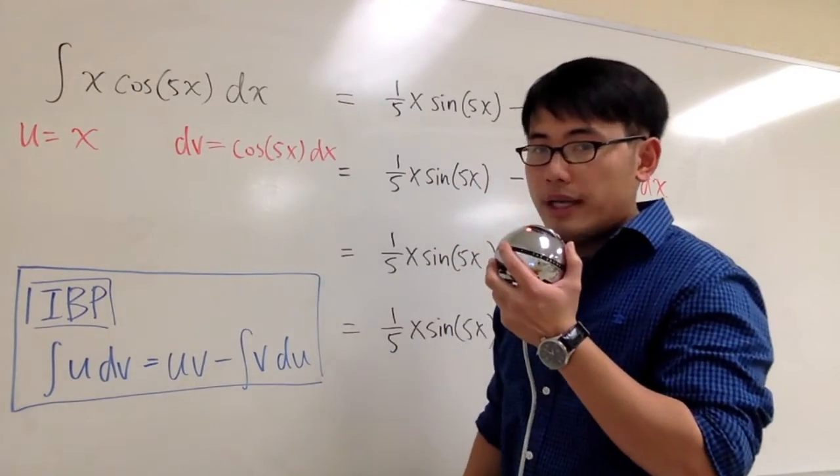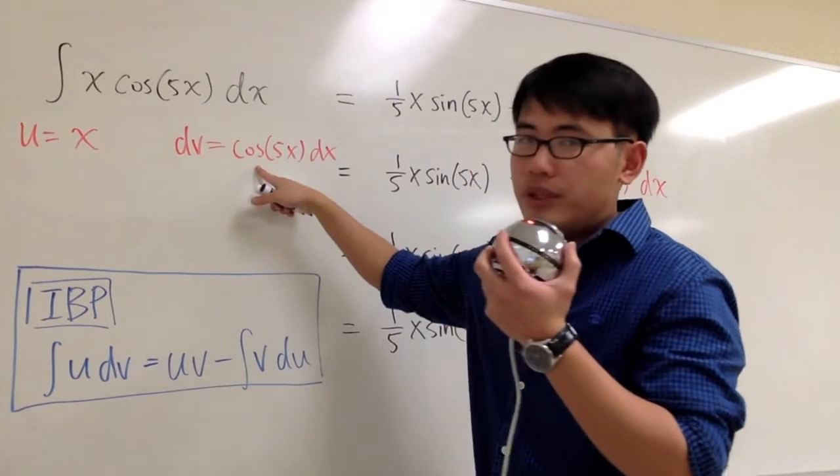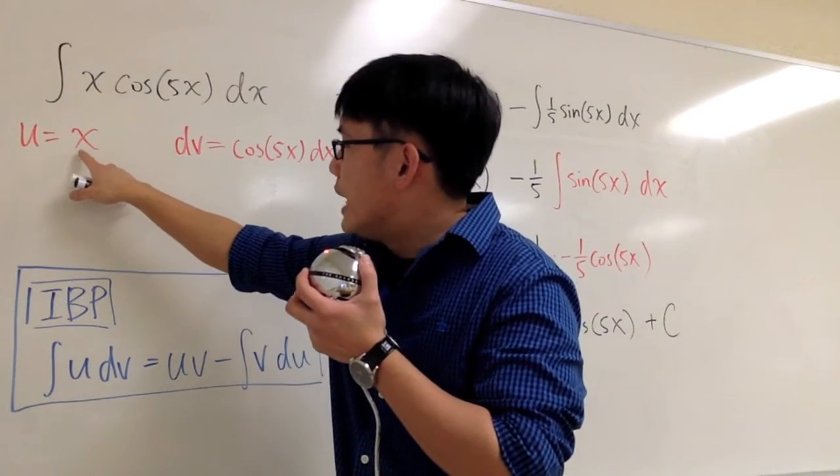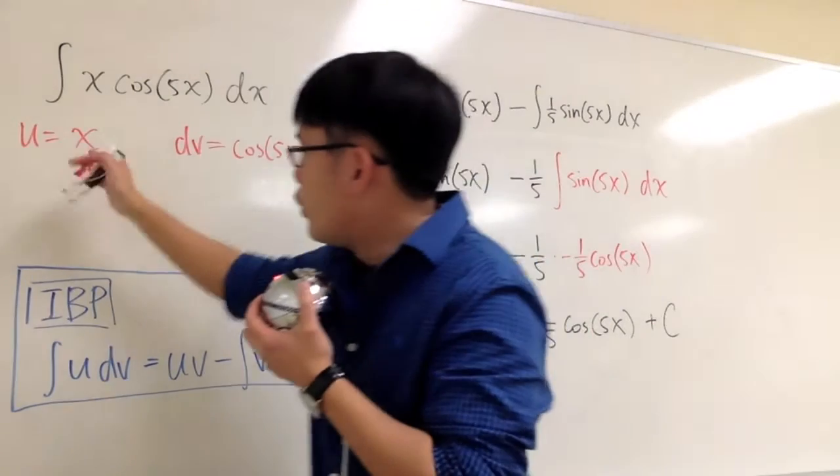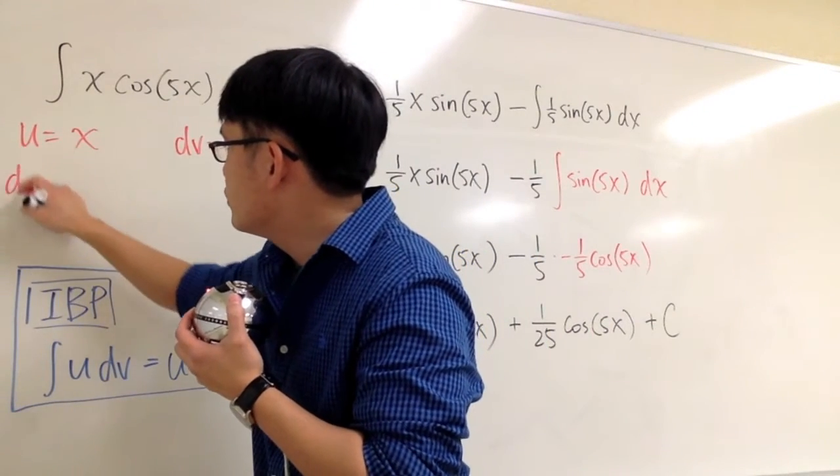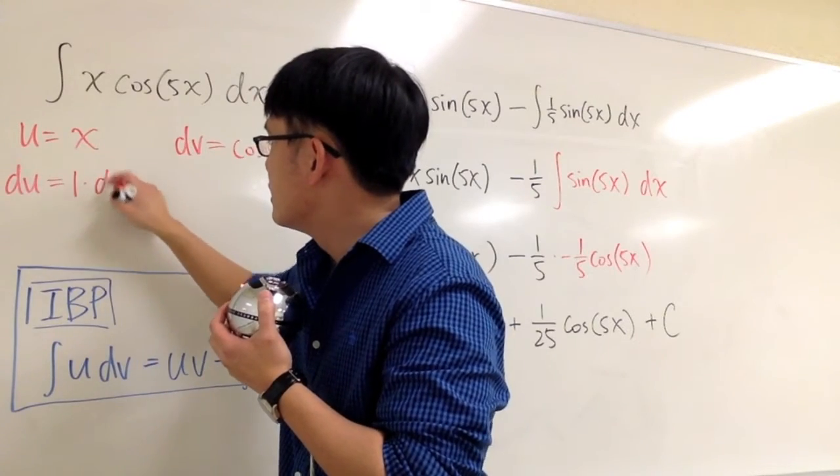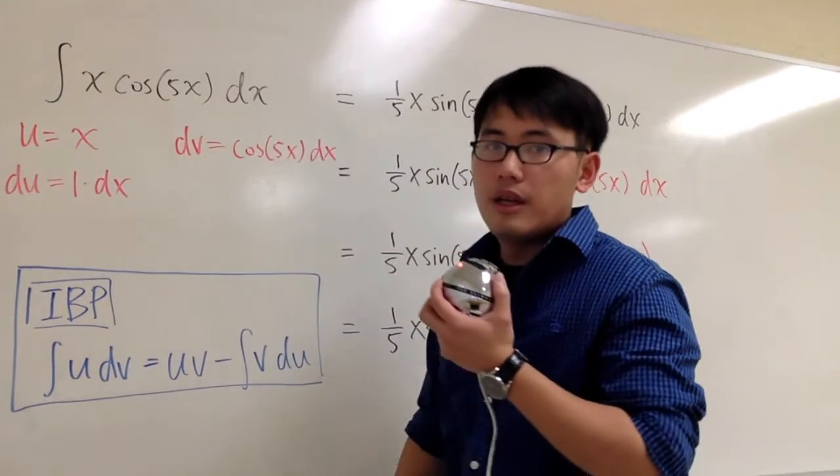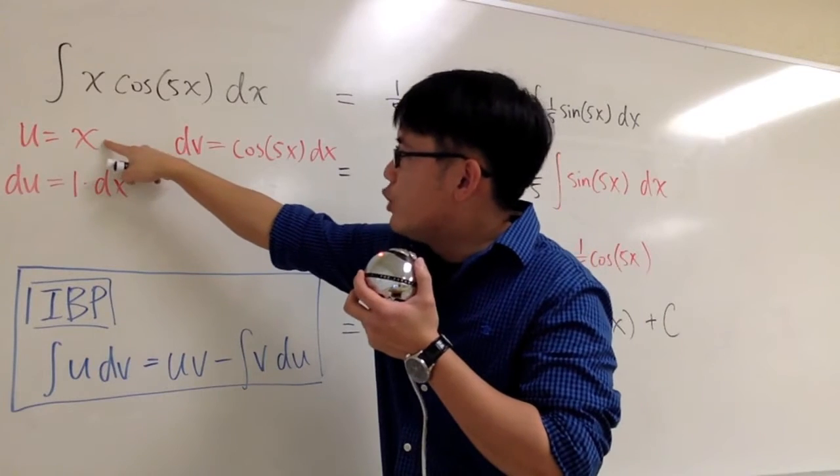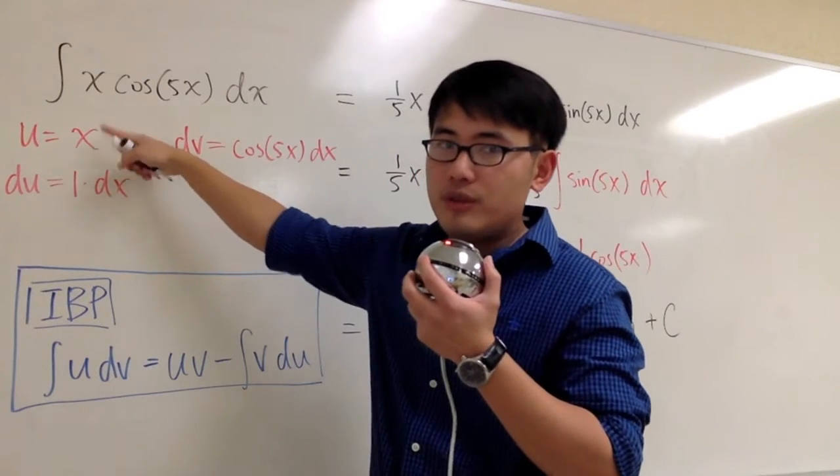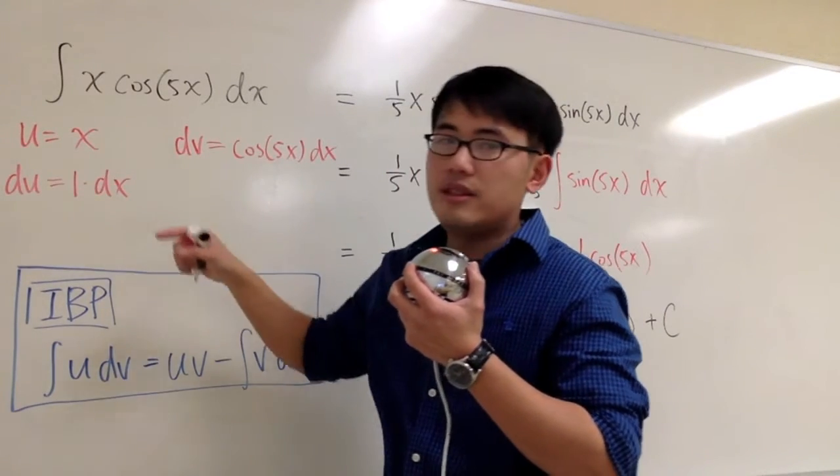And the reason why is because this is pretty easy to integrate. But then, the advantage is, having x right here, when we differentiate this equation, we get du. Du will be just 1 times dx. So as you can see, originally, you have the function like x, but now once you differentiate that, you just get a constant, the 1.